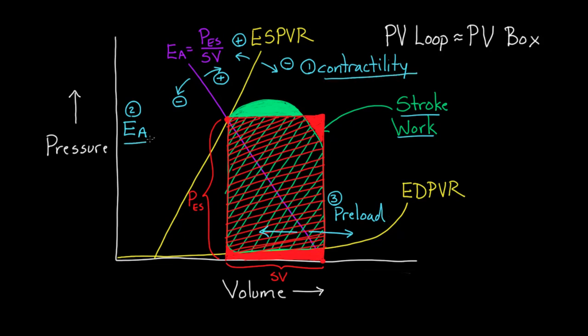So these are the three tricks we have to changing the size of our box. Contractility is one, changing arterial elastance is another, and preload is a third way. And we're going to go through all three in another video, but I just wanted to point out that these are the three ways, and really the only three ways, that I want you to think about changing the size of this box and the two dimensions of it, which are end-systolic pressure and stroke volume.